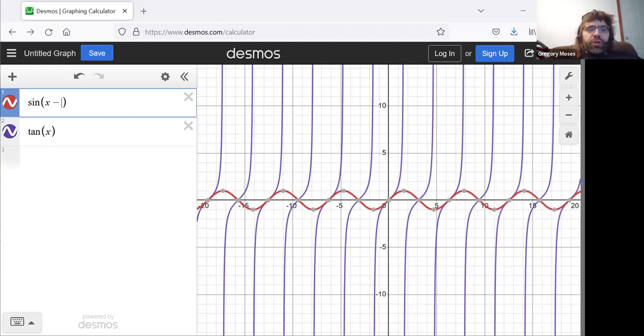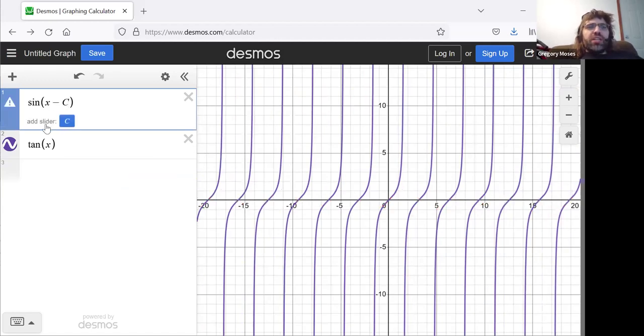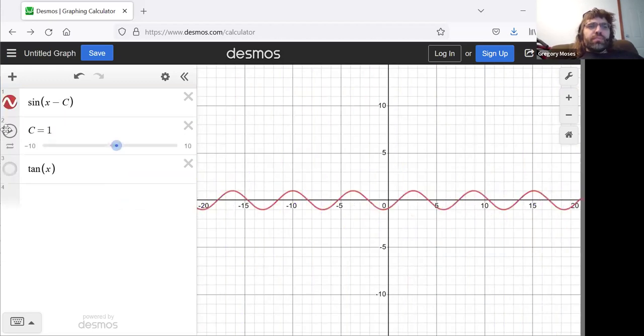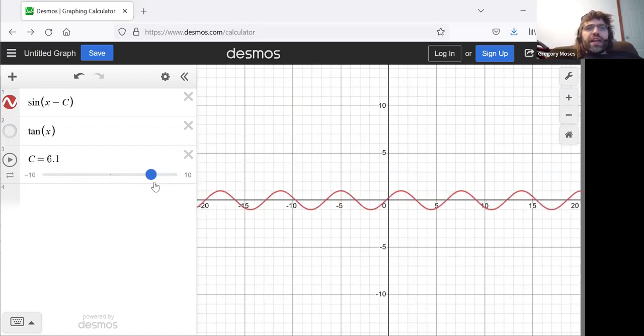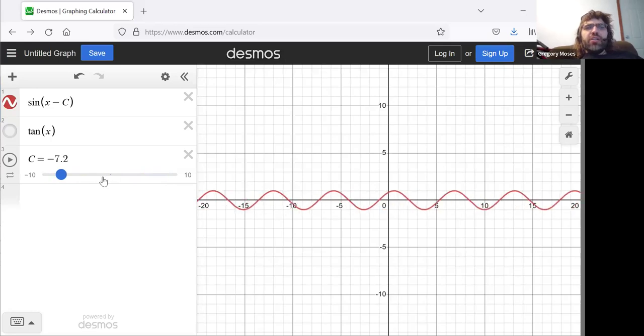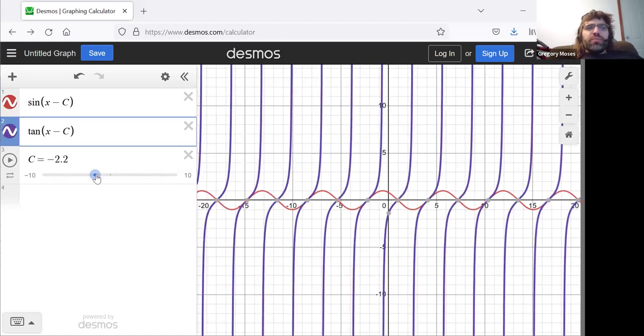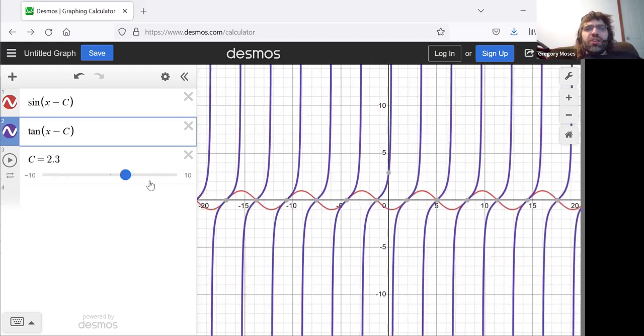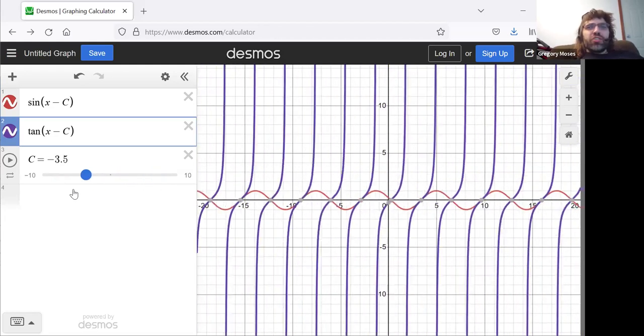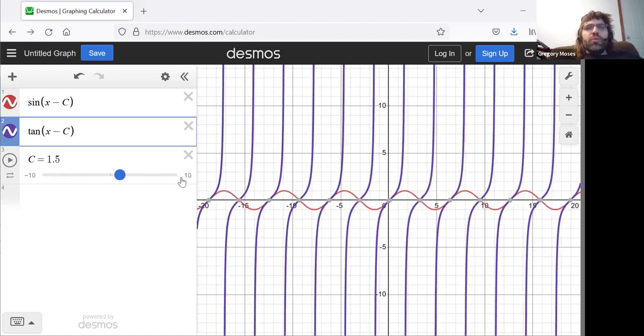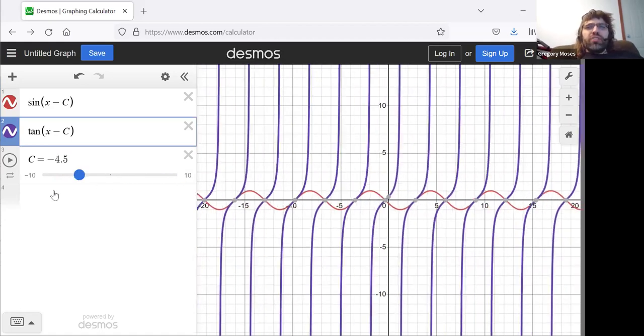If we put a minus c here, then that c moves the graph of the sine horizontally. The tangent, if we put a minus c here, well, guess what? That c causes the tangent curve to move horizontally.